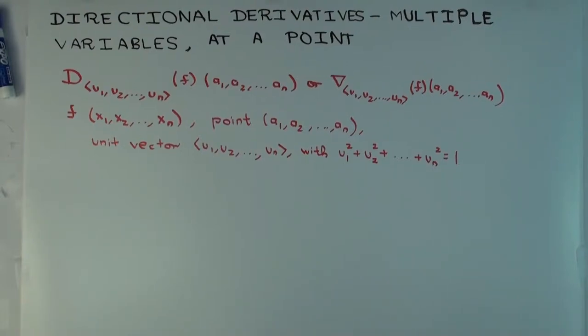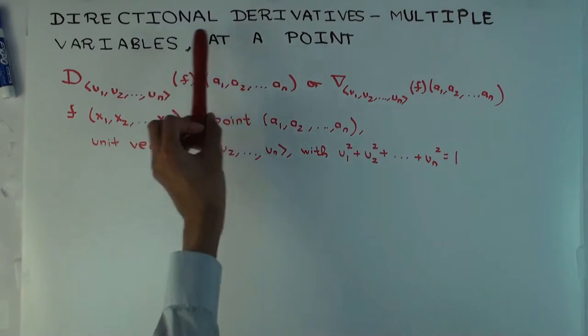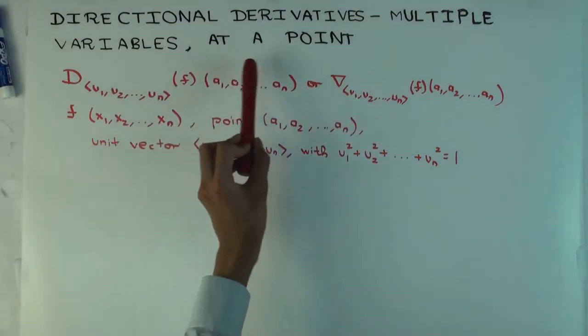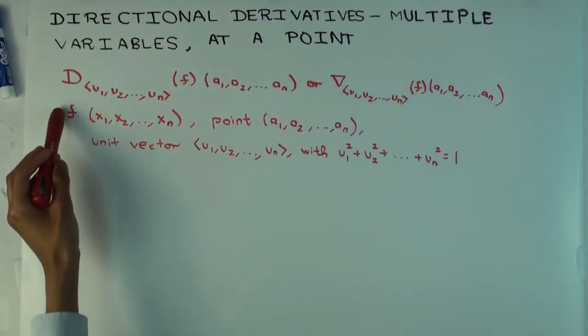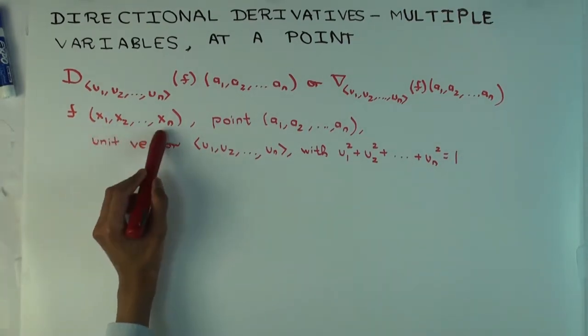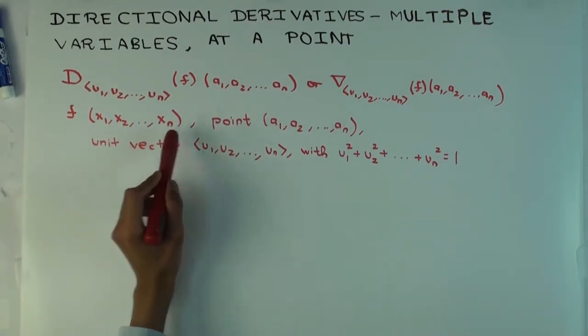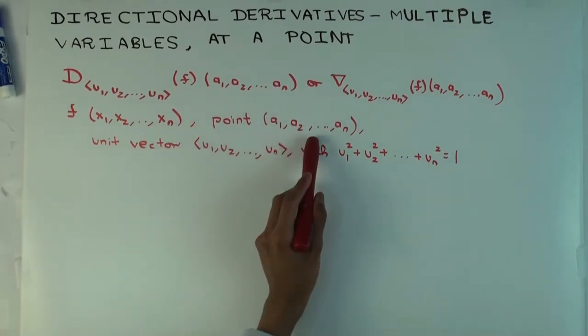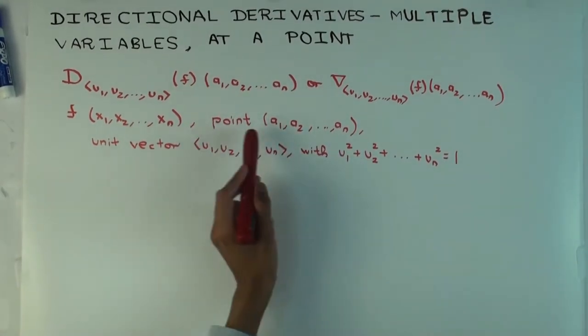So in this talk, I'm going to try to define the directional derivative for a function of multiple variables at a point in the domain. So the notation is here: you have a function of variables x₁, x₂ to xₙ, there's a point in the domain which is a₁, a₂,...aₙ, so that means that for this point, these are actual numerical values.